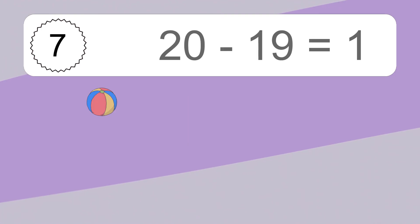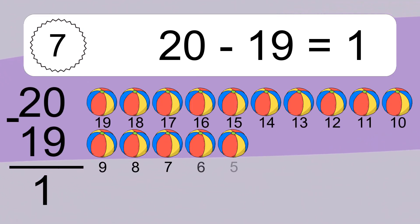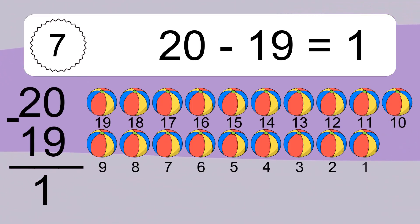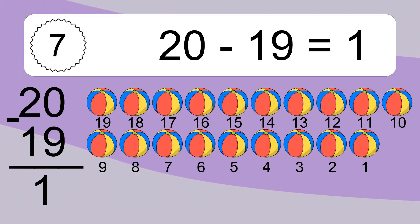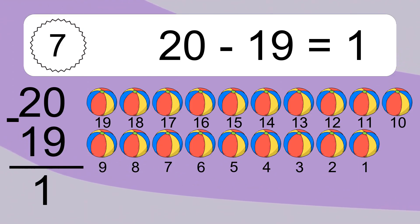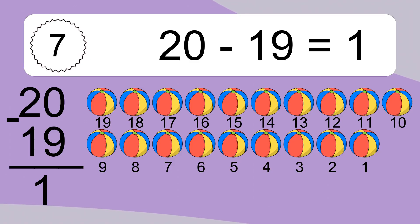20 minus 19 equals what? 20 minus 19 equals 1. Let's count it: 19, 18, 17, 16, 15, 14, 13, 12, 11, 10, 9, 8, 7, 6, 5, 4, 3, 2, 1.